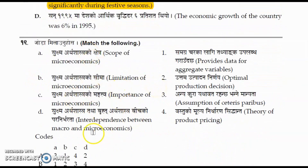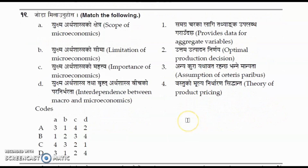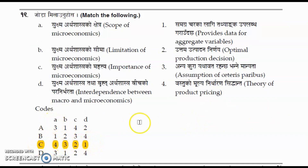Question number nineteen: match the following — scope of microeconomics, limitation of microeconomics, importance of microeconomics, and interdependence between micro and macroeconomics — with the correct descriptions. The correct option is option C: the matching order is 4, 3, 2, 1 for A, B, C, D respectively.